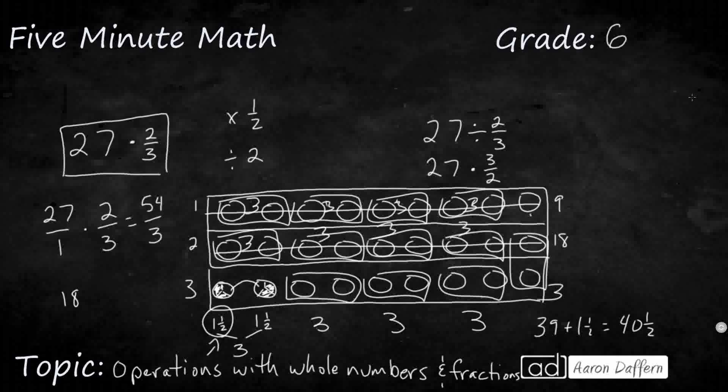And so you multiply, and you're going to end up getting, let's make that over one. You end up getting eighty-one halves. Now if you want to make that a mixed number, you can divide two goes into eighty-one forty times, and there's one left over, so it's forty and one-half.